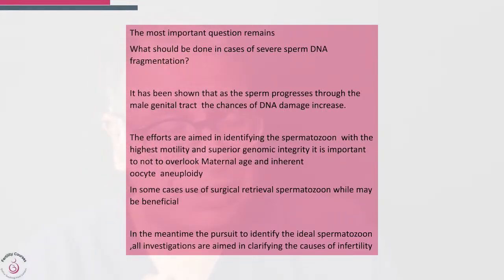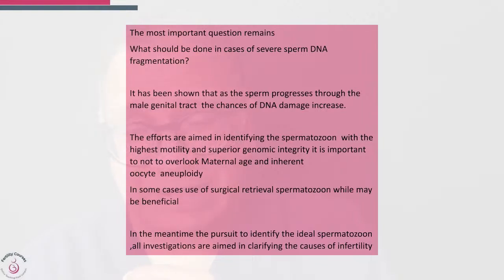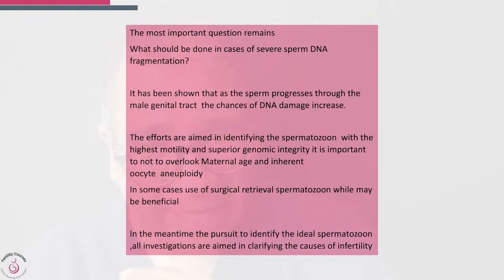I tend to use sperm DNA fragmentation testing when couples have been trying for a long time with a normal sperm count and the man believes everything is fine. In those cases, a fragmentation test allows us to say that trying naturally or doing IUI may not be useful. The second scenario is when we do not get blastocysts and cannot find the cause, especially in women under 40. Though it occurs in three to five percent of cases, it's important to explore the sperm, given its inherently powerful role in converting from day three to day five.